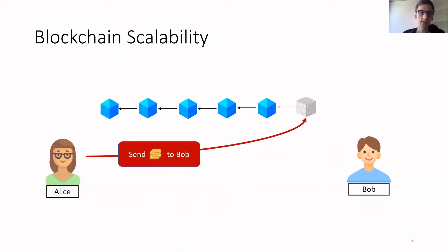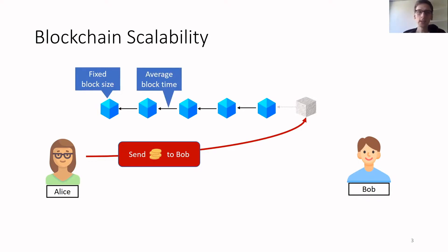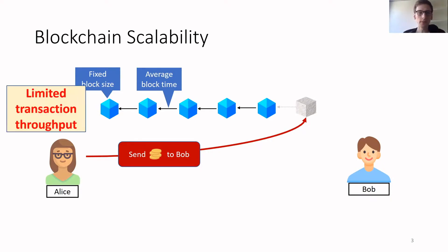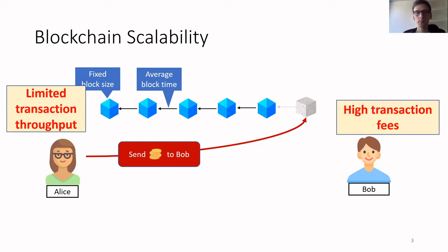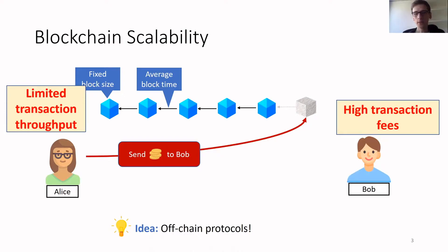The blockchain has two characteristics. First, it has a fixed block size, meaning there can only be so much data in one block. Second, there's an average block time, meaning there can only be so many new blocks in a certain time period. From this results that cryptocurrencies have a limited transaction throughput and high transaction fees, which is known as the blockchain scalability problem. One of the most promising proposals to solve this problem are so-called off-chain protocols, which allow running applications on blockchain while only having minimal interaction with the blockchain itself.